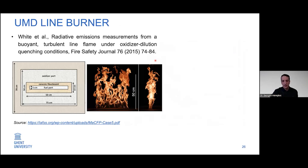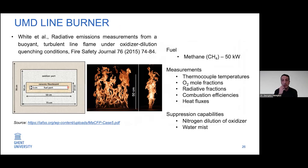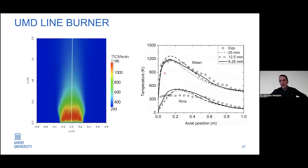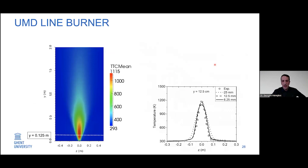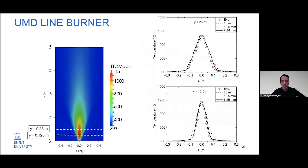Another validation test case is the UMD line burner — a 50 cm long, 5 cm wide burner with methane at 50 kilowatts. We examine centerline temperature mean and RMS as a function of grid size, and radial profiles of temperature at two different heights. In most cases, we are close enough to the experiments — the agreement is not always perfect, but we are on the correct order of magnitude for temperature and velocity predictions.